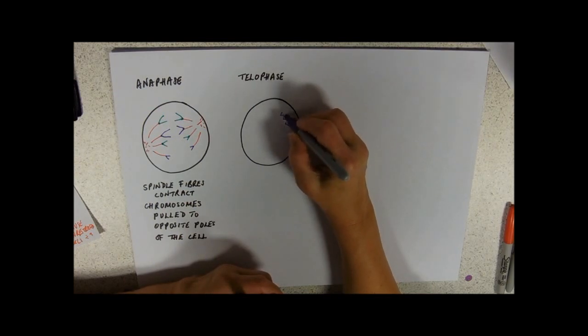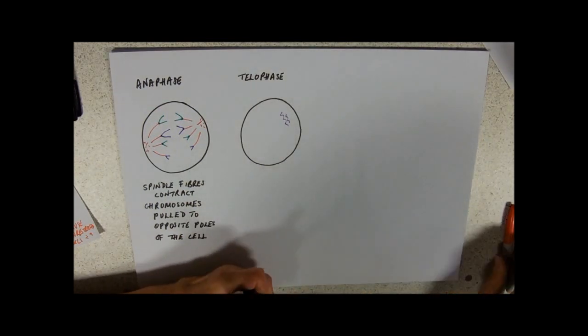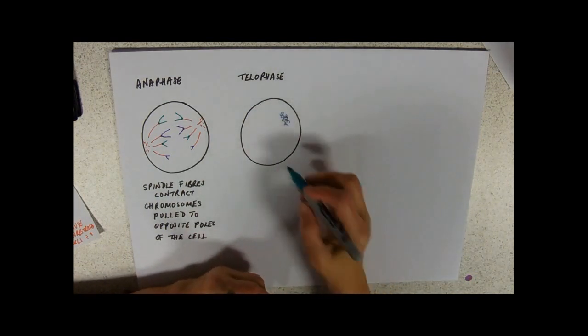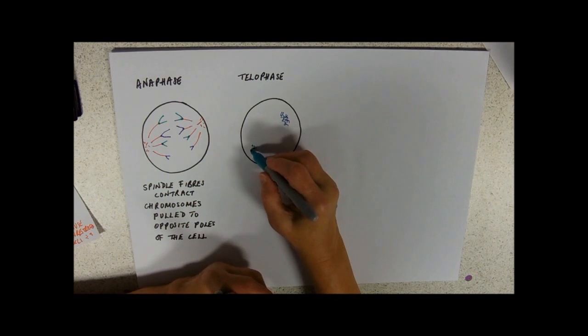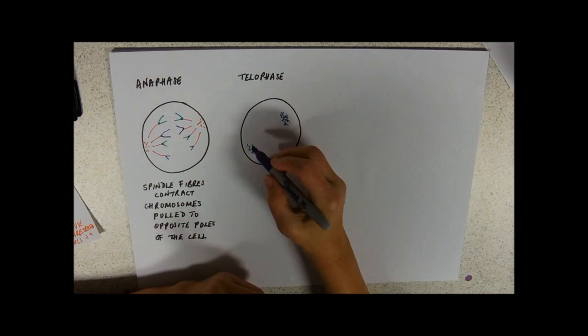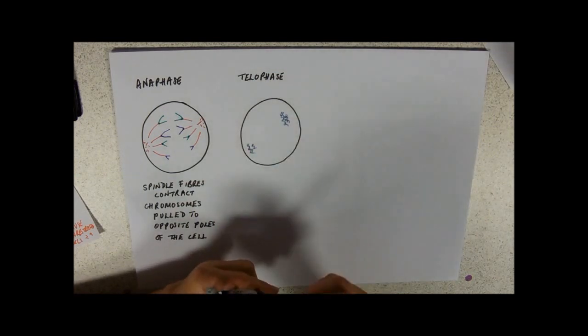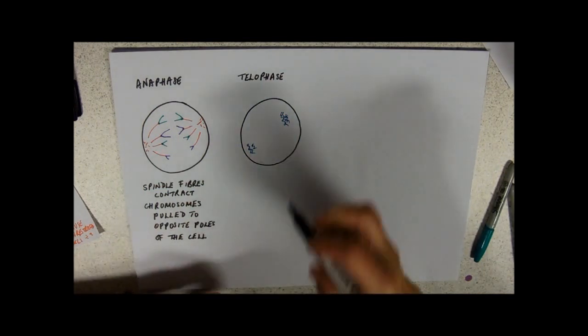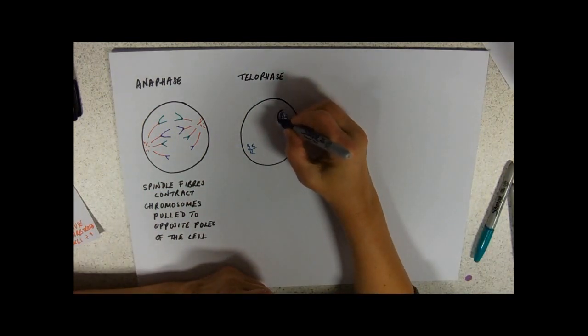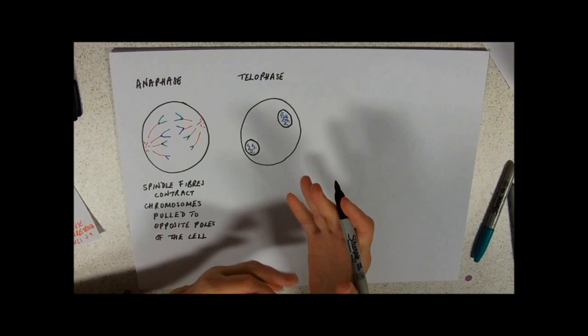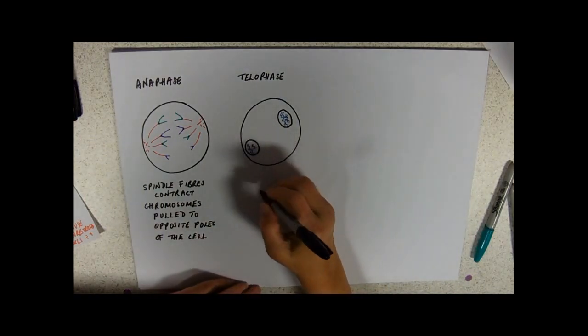And this is where our chromosomes start to unwind again. So they reach the poles. They start to unwind and become less visible. So I'm just doing some squiggles to represent my chromosomes here. And we get the nuclear membrane reforming. So at the end of telophase we've actually got a cell with two nuclei in it.